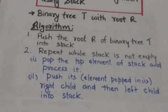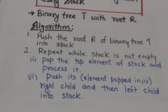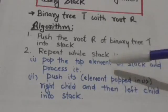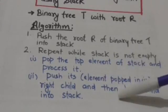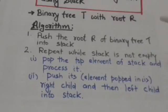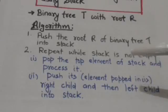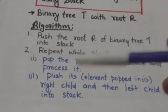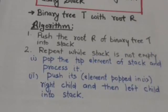In this algorithm, first we will push the root R of binary tree T into the stack. After this, while the stack is not empty, these two steps will be repeated: first, we will pop the top element of the stack and process it, and second, after processing the node we will push its right child into the stack and then its left child into the stack. It would be more clear after this example.